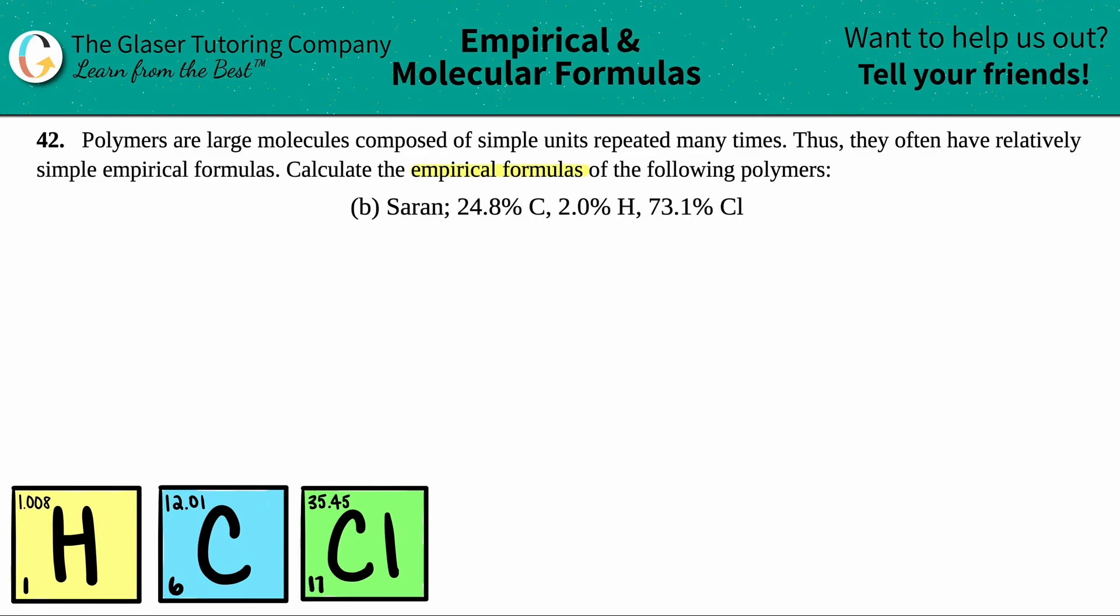Now, just to put this into perspective, we have to find the empirical formula of Saran. So this is Saran wrap, right? The plastic wrap that we use to wrap up our peanut butter and jelly sandwich when we go off to work or school.